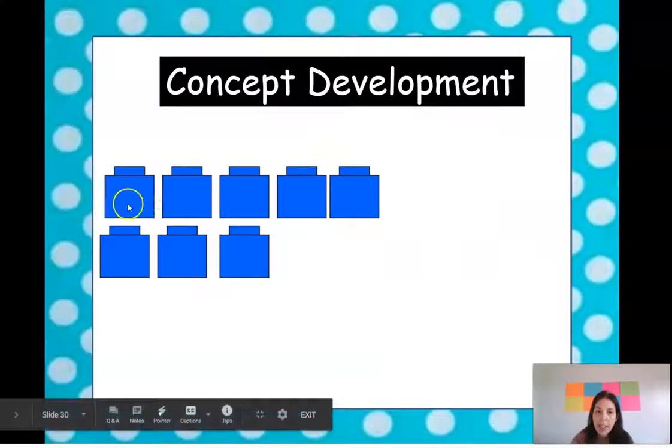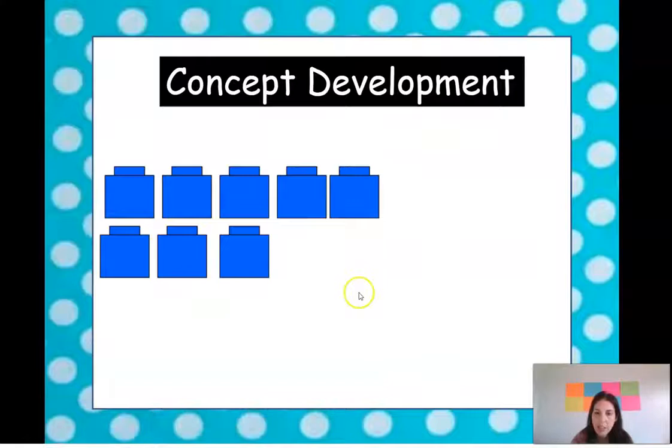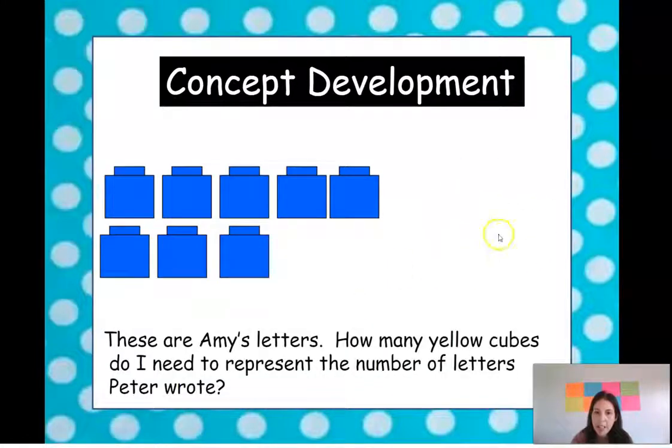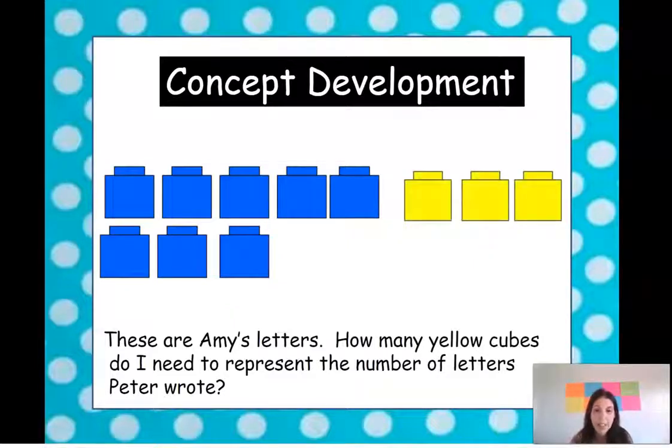Okay so we have five, six, seven, eight. How many do we need on the other side? How many yellow cubes do we need? One, two, three. Very good. So we have eight and we have three.